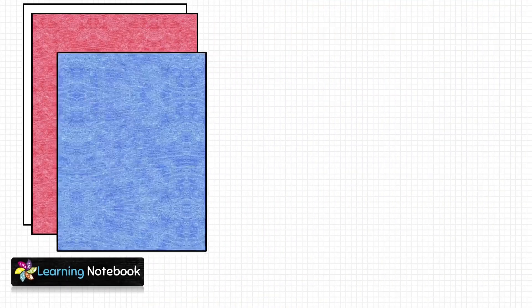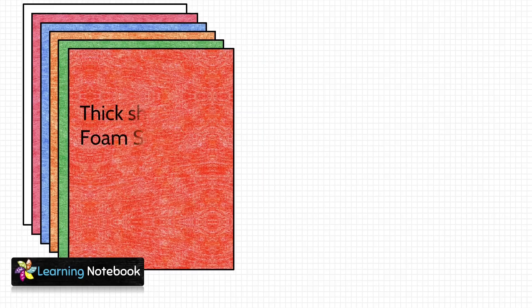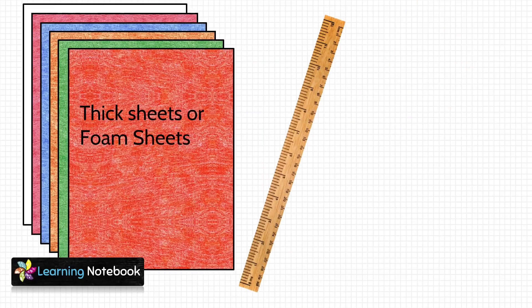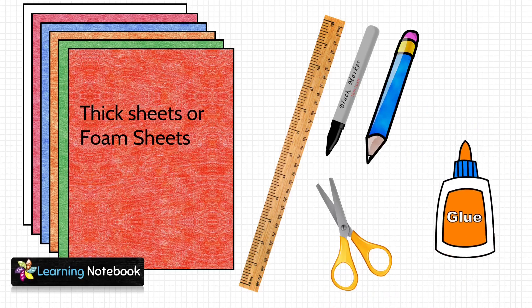For this activity we need a few colorful thick sheets, a ruler, a black marker pen, a pencil, a pair of scissors, and a glue bottle.